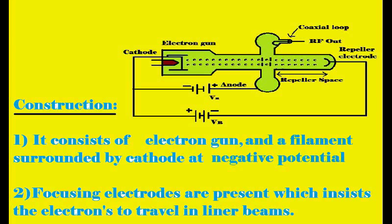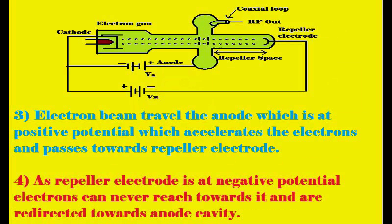As we can see from the schematic, the anode — that is, the cavity — is connected to the positive terminal of the source, so a positive voltage is induced in the cavity. The electron beam travels from cathode towards the anode, and due to the positive potential, the electrons are accelerated and pass towards the repeller electrode.